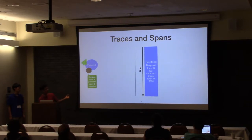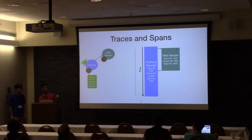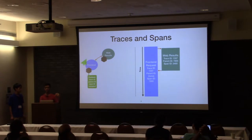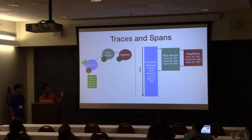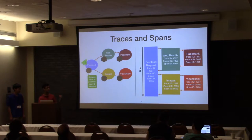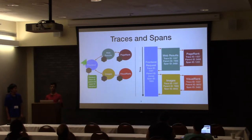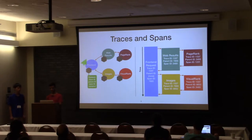In this example, you can see the front-end request has no parent ID, and it generates a random span ID. Then when it contacts the web results service, the span ID of the front-end becomes the parent ID of the web results, and so forth with the page rank. When the front-end makes an additional request to the image service and the visual rank service, the parent IDs and span IDs are set accordingly. Span IDs are randomly generated, and parent IDs identify the parent span of each individual item.